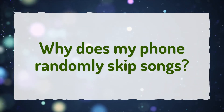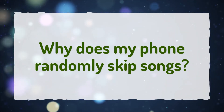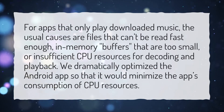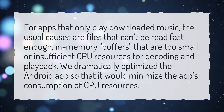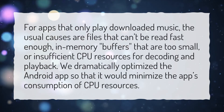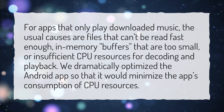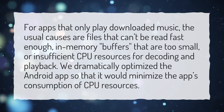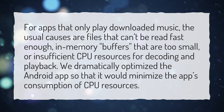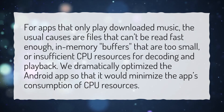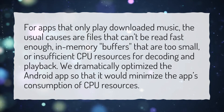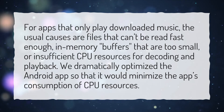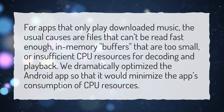Why does my phone randomly skip songs? For apps that only play downloaded music, the usual causes are files that can't be read fast enough, in-memory buffers that are too small, or insufficient CPU resources for decoding and playback. We dramatically optimized the Android app so that it would minimize the app's consumption of CPU resources.